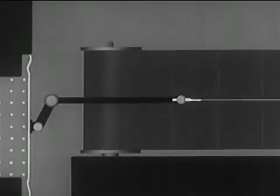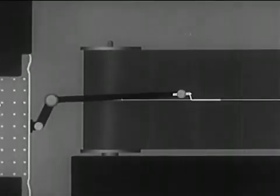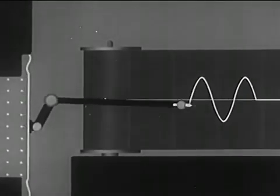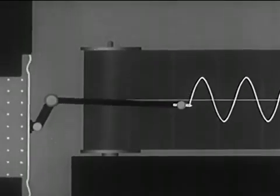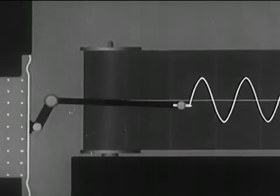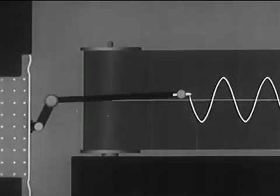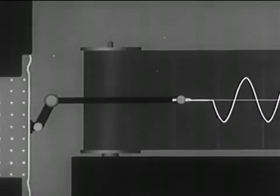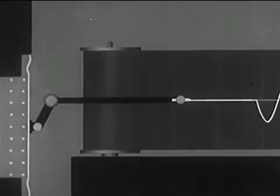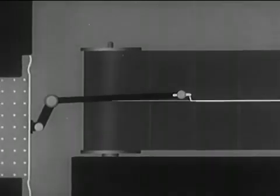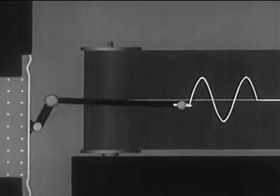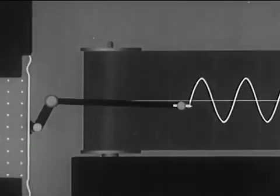We can record pressure variations in sound waves with this kind of instrument, an oscillograph. Sound waves are striking the diaphragm on the left, and the stylus records the sound waves as a graph. Later, we shall use such graphs to represent sound waves. Condensations cause the stylus to move upward; rarefactions cause it to move downward.